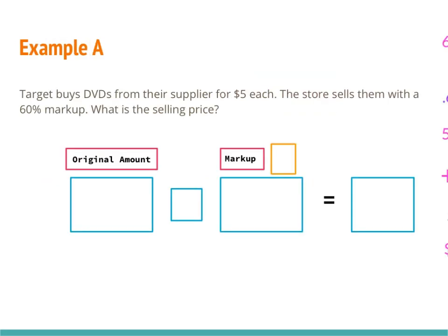In example A: Target buys DVDs from their supplier for five dollars each. The store sells them with a 60% markup. What is the selling price? I've laid out three boxes — one for the original amount, one for the markup, and one for the answer. Since it's a markup, I know I'm going to be adding to the total, so I put a plus sign there.